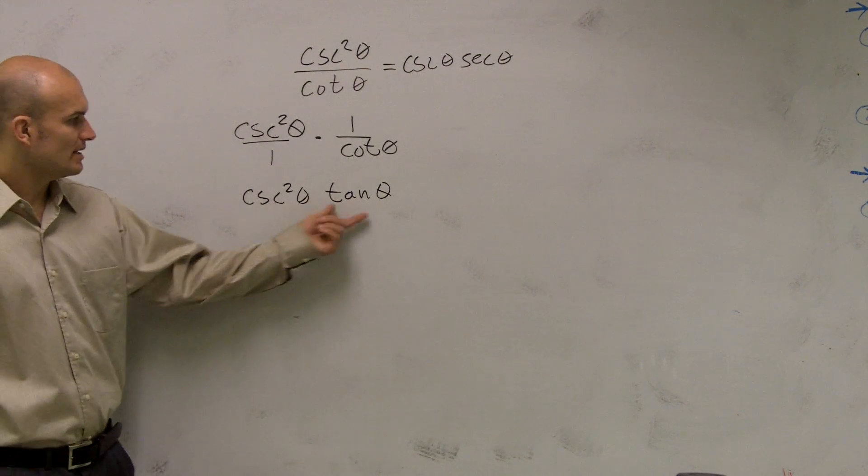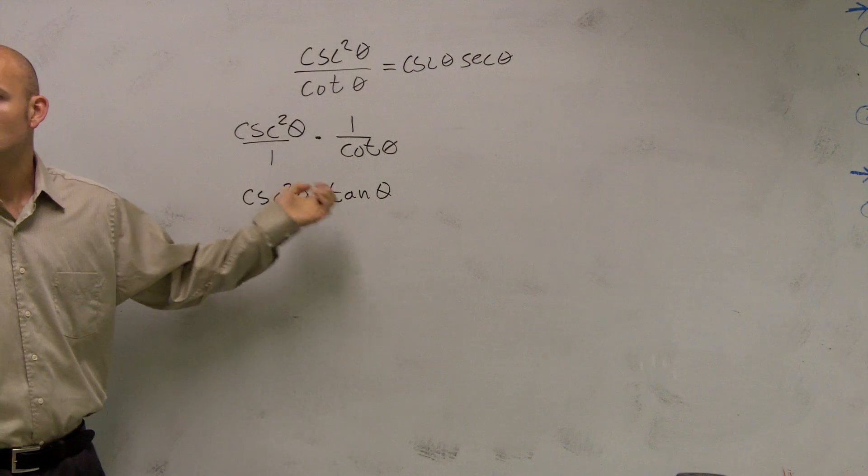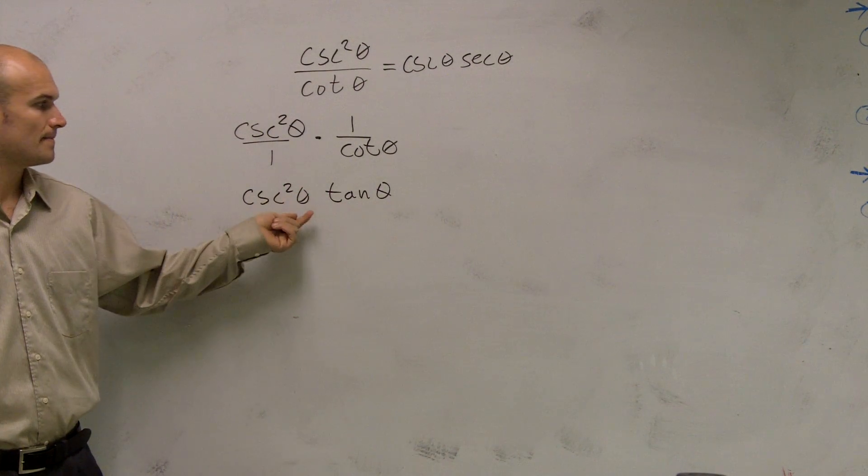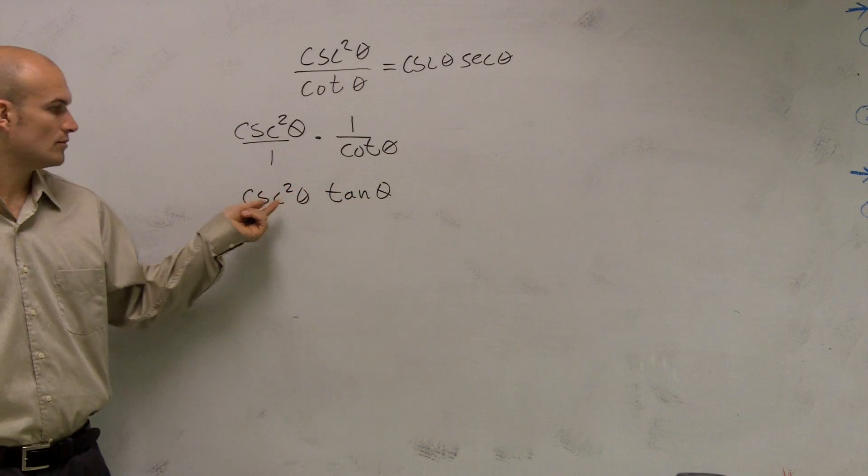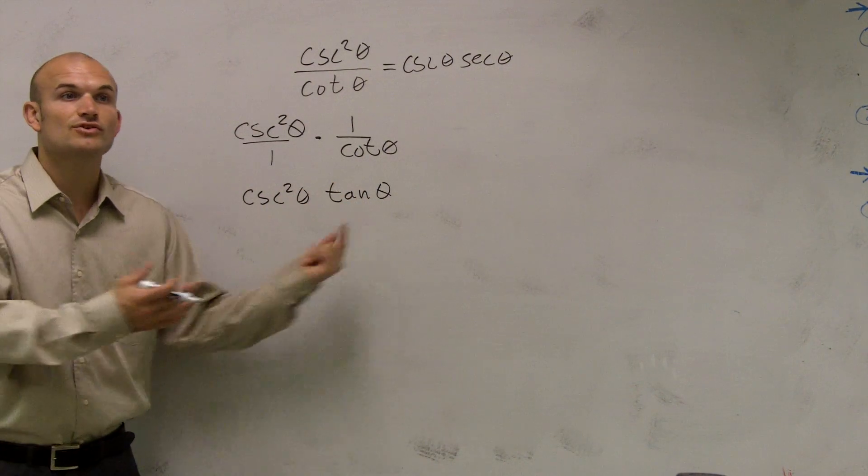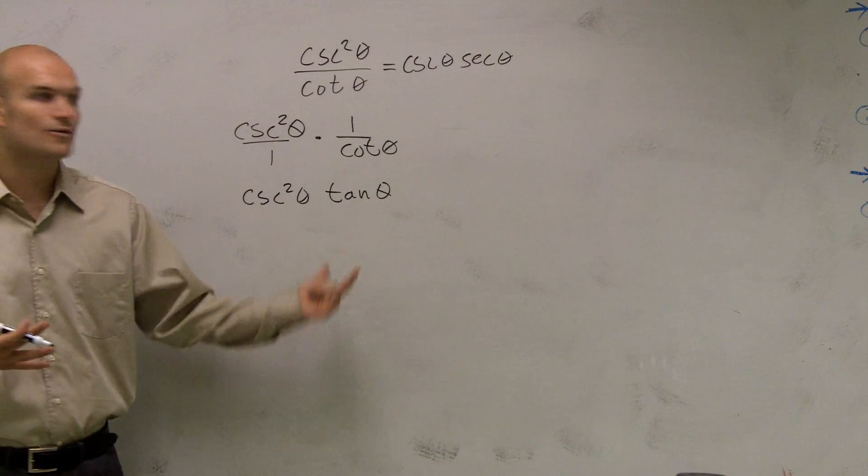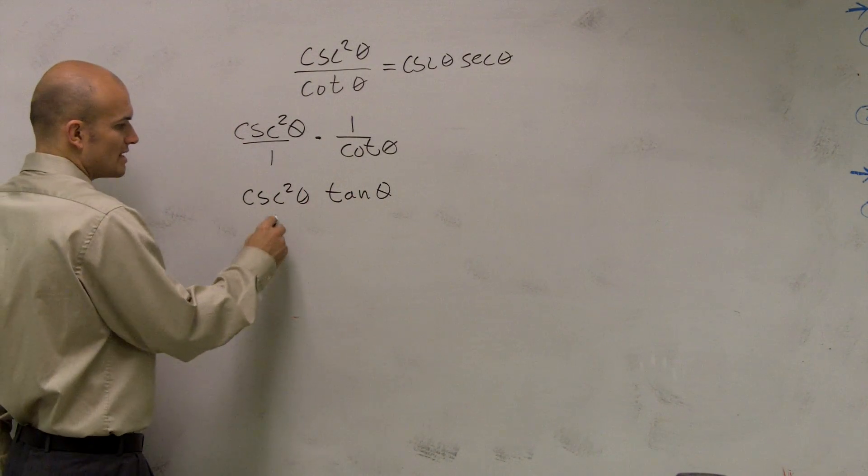Well, how are we going to cancel out cosecant and tangent? What do we need to change these to? You can change cosecant to 1 over sine and tangent to sine over cosine. 1 over sine squared, and yes, sine over cosine. We can convert them to sines and cosines. So if you get stuck, you don't know what to do, convert them to sines and cosines.